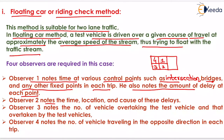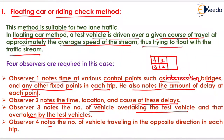The second observer notes the time, location, and causes of these delays. The third observer notes the number of vehicles overtaking the test vehicle and those overtaken by the test vehicle. Observer 4 notes the number of vehicles travelling in the opposite direction in each trip.